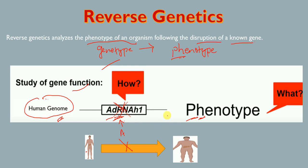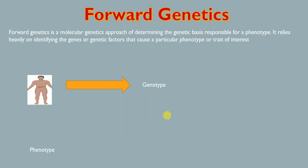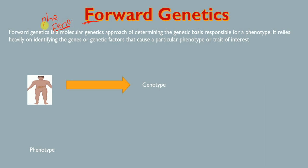Now, what is forward genetics? Unlike reverse genetics, forward genetics starts from the phenotype. A helpful way to remember this: forward starts with 'F', and so does phenotype — which can also be written as 'pheno'. So forward genetics always starts from the phenotype.